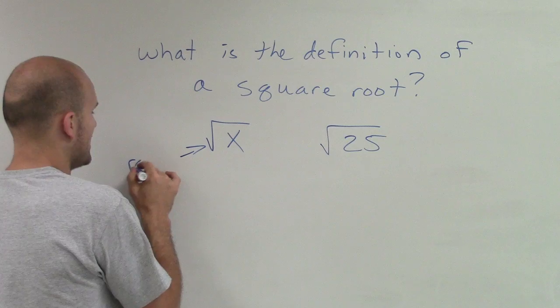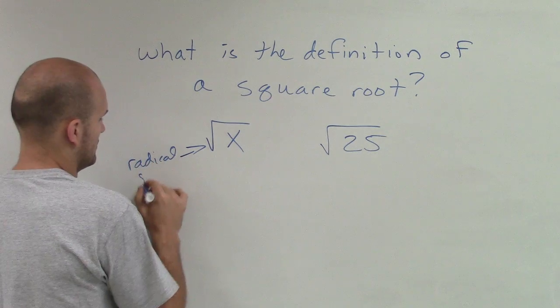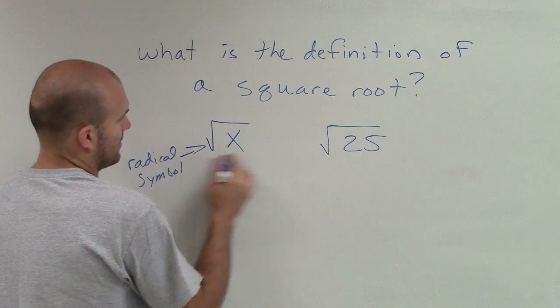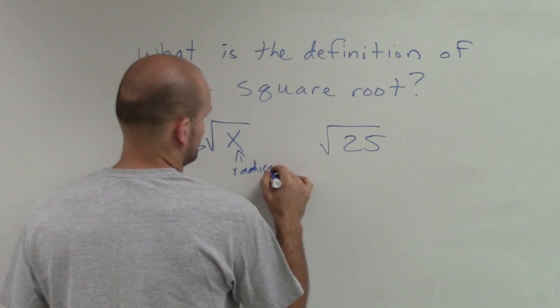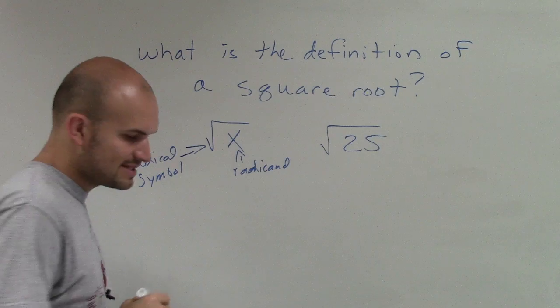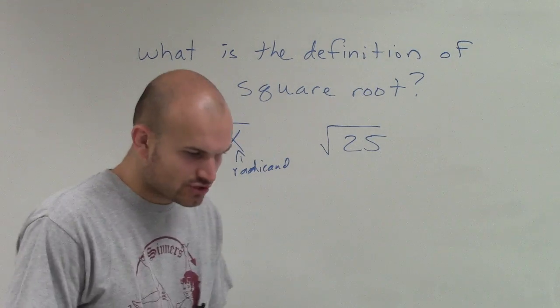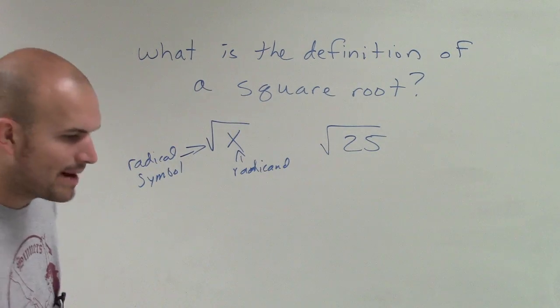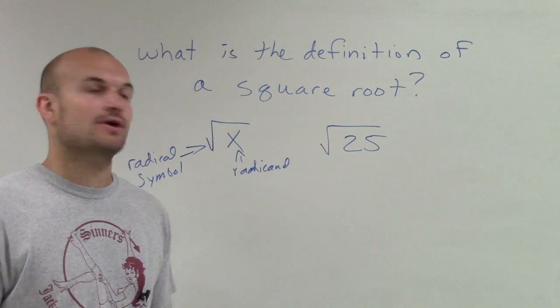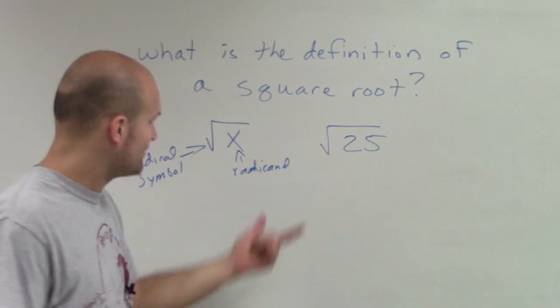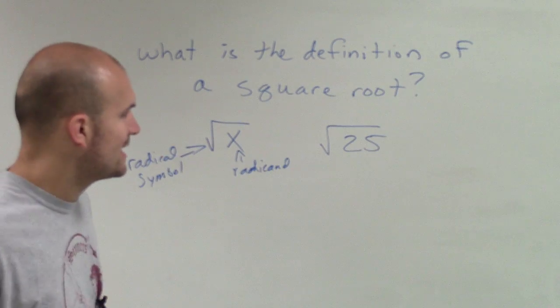So here's what we call the radical symbol, and here's what we call the radicand, the number inside. When we take the square root of 25, what the square root represents is what two numbers multiplied by each other equals 25, or equals x in that instance.